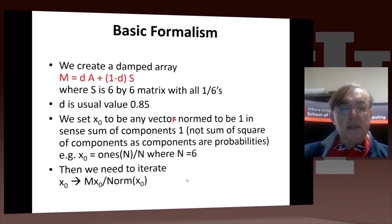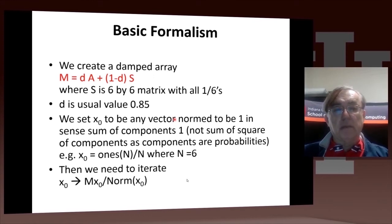So you take that matrix A, and we form a new matrix M, which is damped by adding a matrix S, which corresponds, if you remember, in our original discussion, to the chance that somebody will type a random URL in the header of the web page. And so you form a new matrix M, which is D times A plus 1 minus D times this matrix S, where every entry has the same value, which is in this case 1/6th.